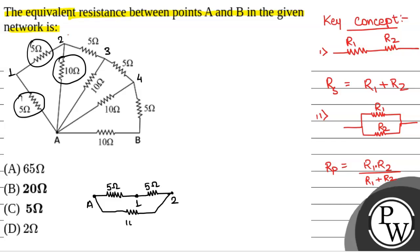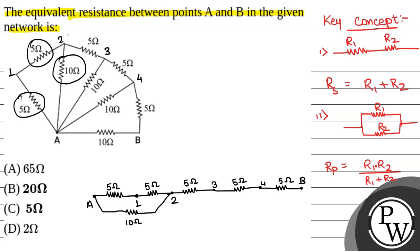And this is of 10 ohm. Now, there is a resistor between 2 and 3, that is of 5 ohm. Then there is a resistor between 3 and 4, that is again of 5 ohm. Then again, there is a resistor between 4 and B, that is again of 5 ohm.